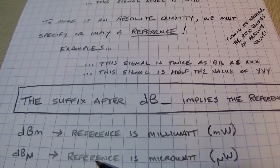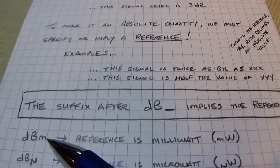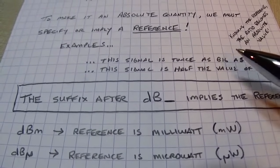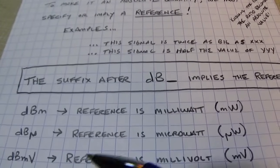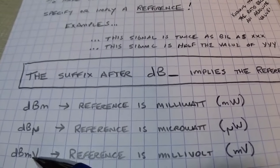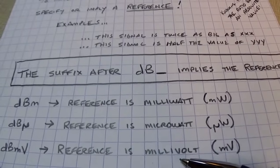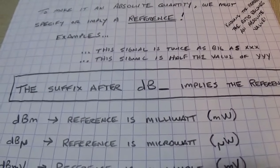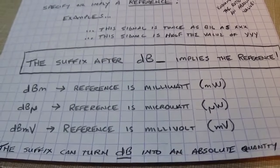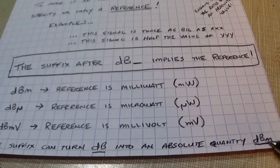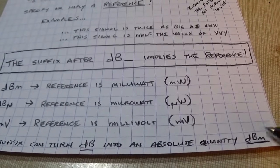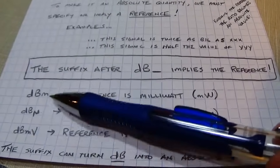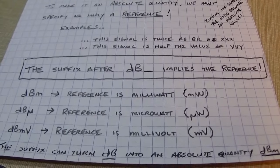The suffix on dB specifies the reference. dBm means the reference is a milliwatt. dBμ (dBu) means the reference is a microwatt — the 'W' is often omitted, with the convention being that we're talking about power in watts. dBmV means the reference is a millivolt. So the suffix turns a dB ratio into an absolute quantity: dBm tells you the power level relative to one milliwatt.